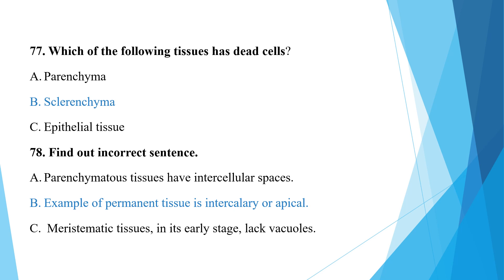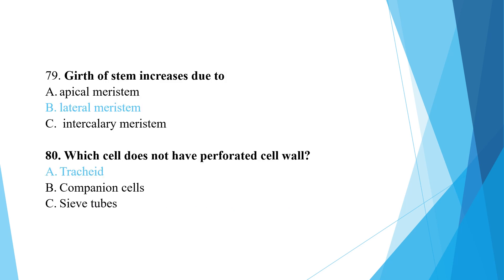Find out the incorrect sentence. Vascular cavity tissues have intracellular space — this statement is correct. Examples of permanent tissue are intercalary or apical — this is wrong, because intercalary and apical are types of meristematic tissues. Meristematic tissues in their early stage lack vacuoles — this statement is also correct. Girth of stem increases due to lateral meristem. Gilt cells do not have perforated cell walls; perforated means walls which have some pores. Tracheids' walls have perforated cell walls.